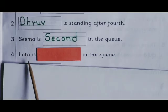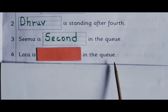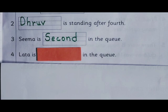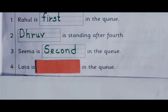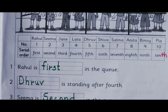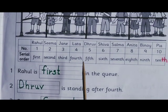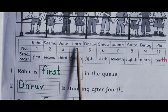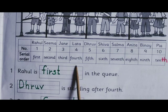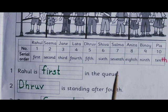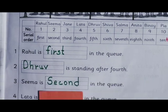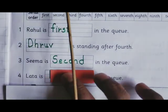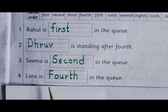Latha is dash in the queue. Latha — 4th. Latha is 4th in the queue.